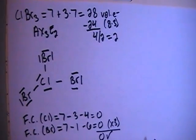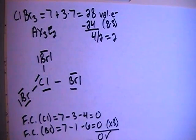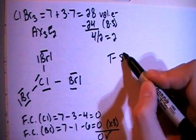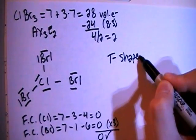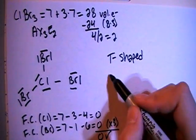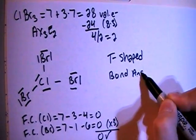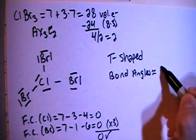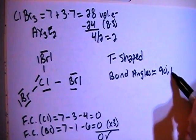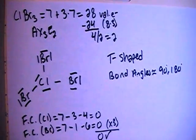Now in terms of shape, with the AX3E2 structure, this is going to be, it's called a T-shaped structure. And when you have a T-shaped structure, the bond angles in this structure are approximately 90 degrees and 180 degrees.